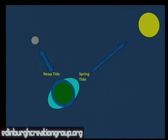When you have the situation where the moon is at right angles to the sun, you have the neap tide. This is where the high tide is not very high and the low tide is not very low. Whereas with a spring tide, the high tide is very high and the low tide is very low.